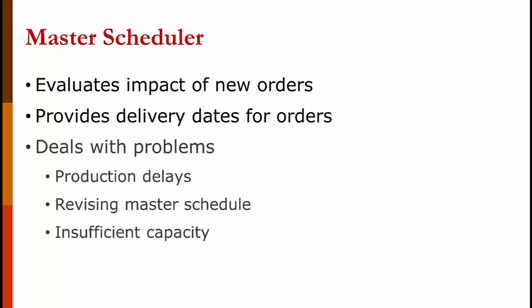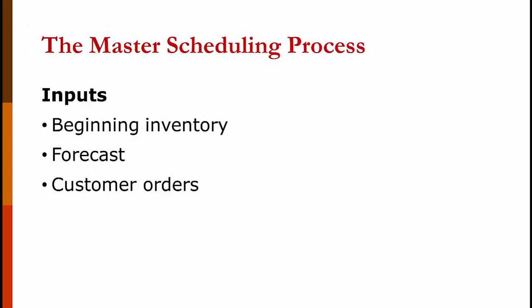A machine breaks down, so production is delayed. Something changes the master schedule — we find out we don't have enough capacity, we can't get certain materials, we have labor problems. The inputs to the master scheduling process are the beginning inventory, the forecast and/or the aggregate plan, and customer orders.